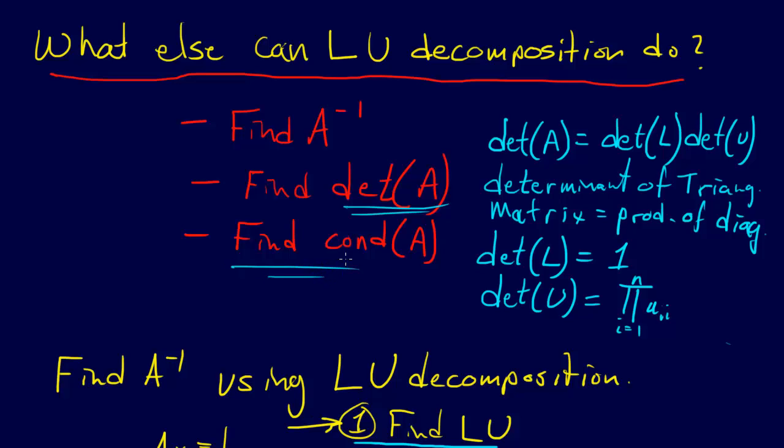And then finally, it can be used to help find the condition number of A. Really this is indirectly because it can help us find A inverse. So this is just through A inverse, but it brings up the topic and leads us into the topic of condition number.